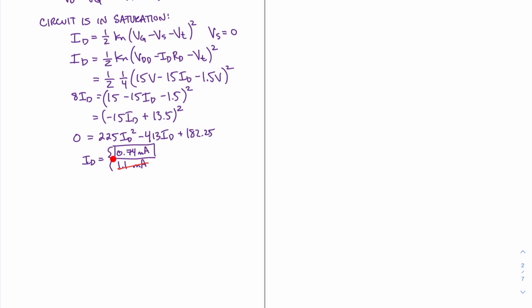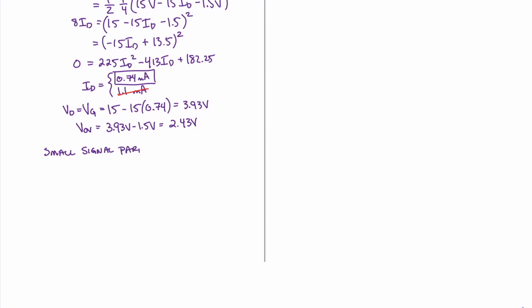Now that we've found the correct current of 0.74 milliamps, we can start the process of finding a few of the voltages in this circuit, which will help us find the small signal parameters. Starting with the voltage at the drain and gate, we find that VD equals VG equals 15 minus 15 times 0.74, which equals 3.93 volts. Since the source is grounded and VD equals VG, we can now find the overvoltage: VOV equals 3.93 minus 1.5 volts, which equals 2.43 volts.